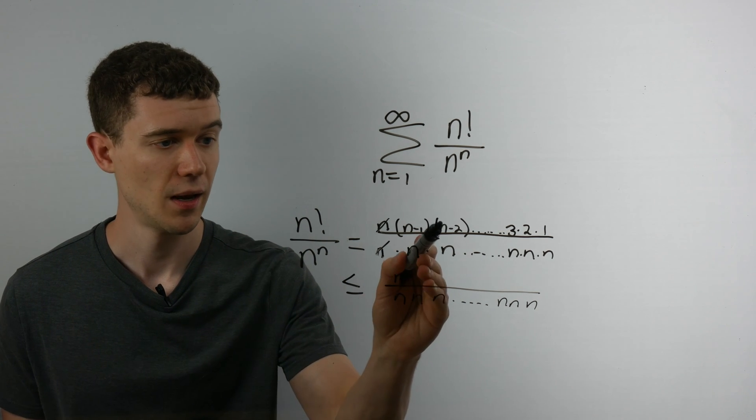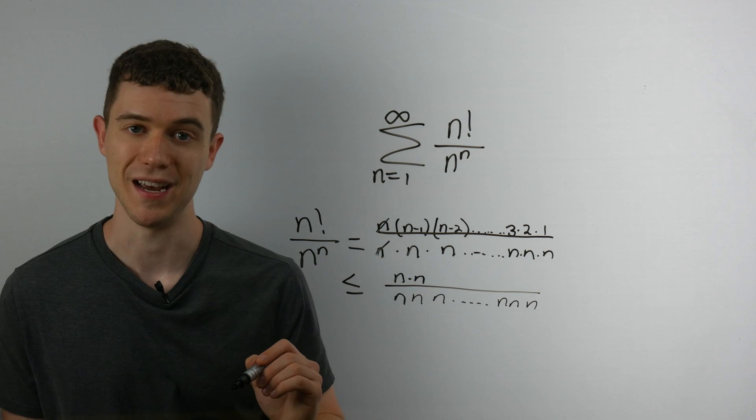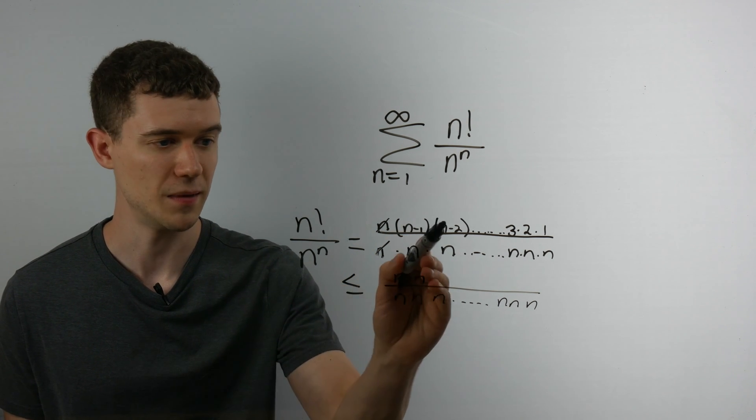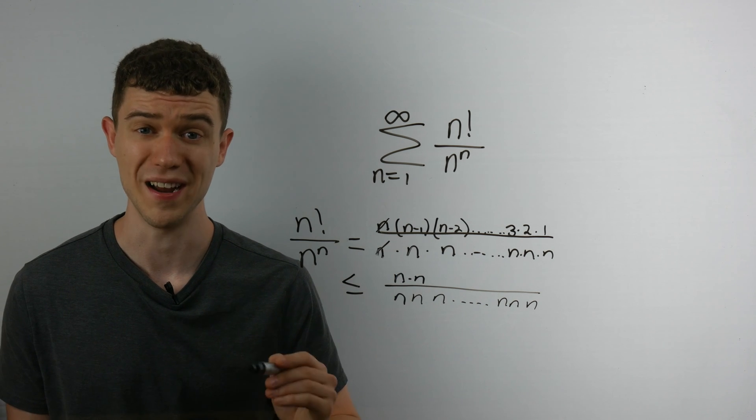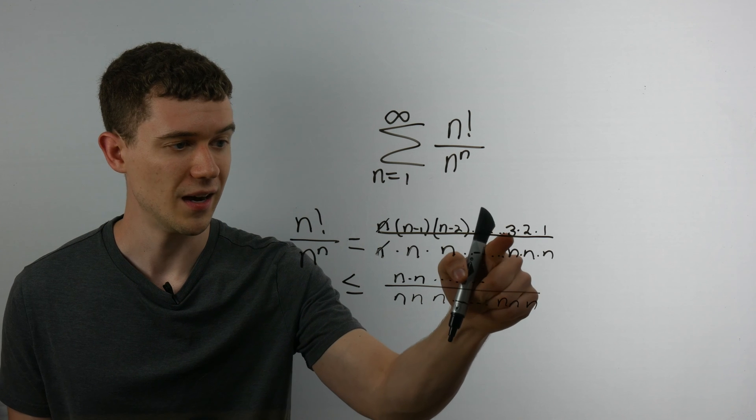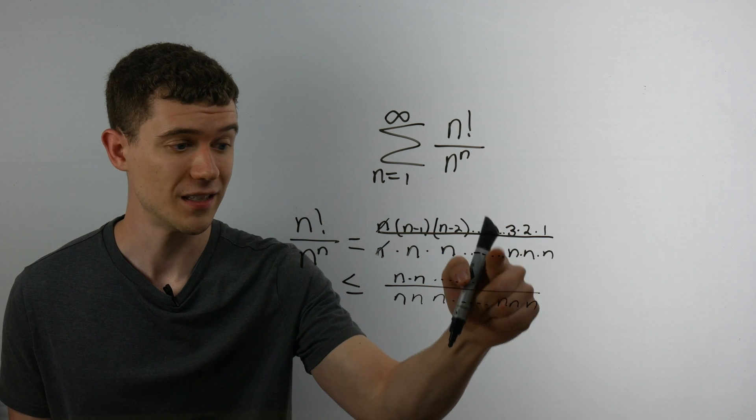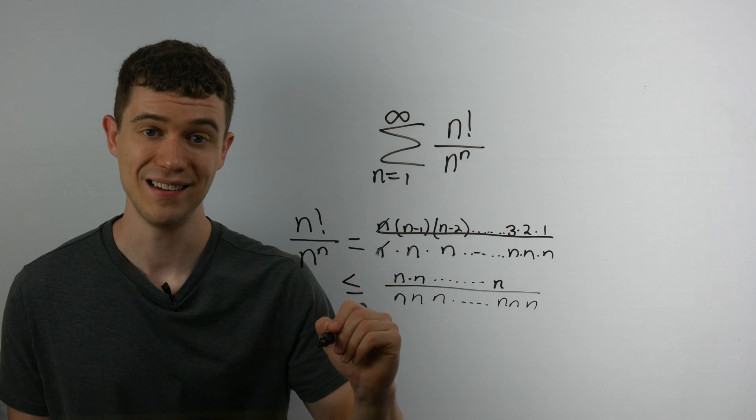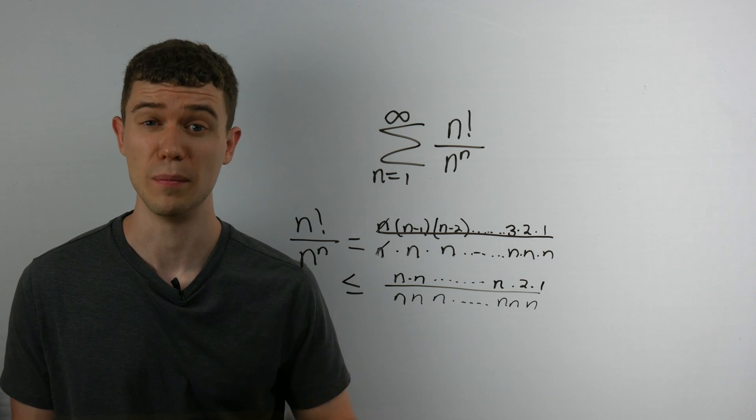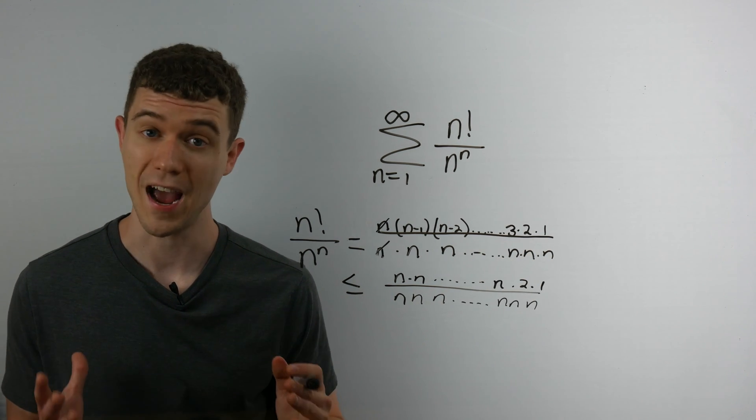So I'm not going to touch the denominator, but in the numerator, n minus 1 is less than or equal to n. Fair. n minus 2 is also less than or equal to n. So I'm taking this n minus 1, I'm bounding above by n. I'm taking n minus 2, I'm bounding it above by n. I'm going to do that all the way down until this 3, this 3 is going to be less than n. And then 2 times 1, I'm just going to leave those, I'm going to leave them alone.